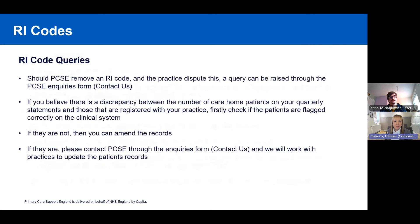If PCSE removes the RI code and the practice disputes this, a query can be raised through the PCSE Inquiries form on the Contact Us page. If you believe there is a discrepancy between the number of care home patients on your quarterly statements and those registered with your practice, first check whether the patients are flagged correctly on the clinical system with the V0 RI code. If they are not, amend the records and resubmit with the RI code. If they are correctly flagged, please contact PCSE through the Inquiries form and we will work with the practice to update the patient's record.